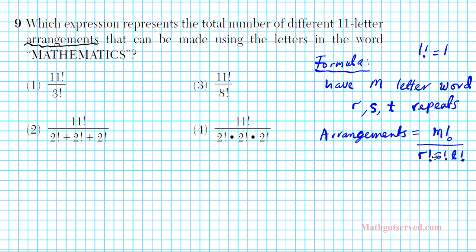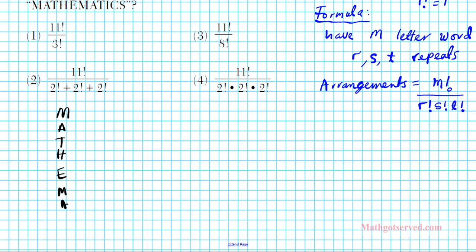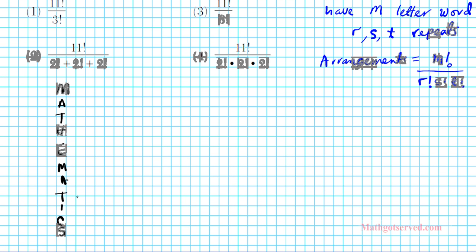So for the word mathematics, the two things you're focusing on are the total number of letters — which is 11 — and how many times any letter repeats itself. Looking at the answer options, it clearly shows you that 11 is the total number of letters, so the arrangements are going to be 11 factorial divided by the letters that repeat.